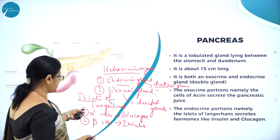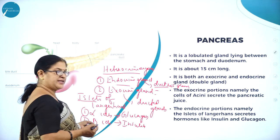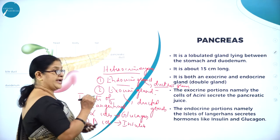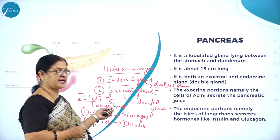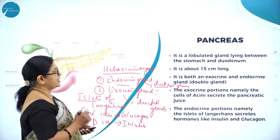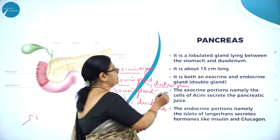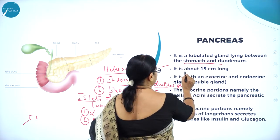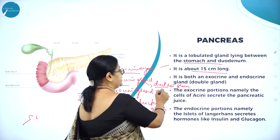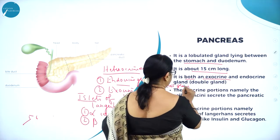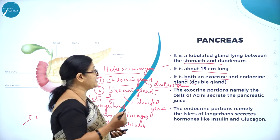Islets of Langerhans produces alpha cells and beta cells, where beta cells produce insulin. The endocrine part of the pancreas is called islets of Langerhans. The pancreas is a lobulated gland lying between the stomach and duodenum. It is about 15 centimeters long and it is both an exocrine and an endocrine gland, hence it is called a double gland or heterocrine gland.